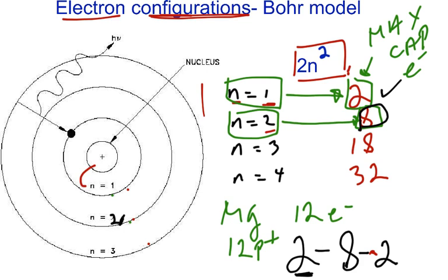So, 2-8-2 means that energy level number 1, you have 2 electrons. In energy level number 2, you have 8 electrons. In energy level number 3, you have 2 more electrons. So, 2 plus 8 plus 2, that's 12. You've accounted for the 12 electrons for magnesium. So, that's simply how you use it.